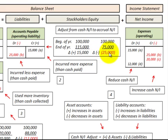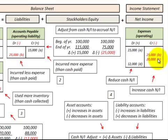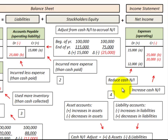In the case where we had a twenty-five thousand dollar reduction in accounts payable, we debit accounts payable for twenty-five thousand. This is where we incurred less expense than the cash that was paid, so the credit goes to expenses for twenty-five thousand, increasing our cash net income because we incurred less expense than the cash paid.